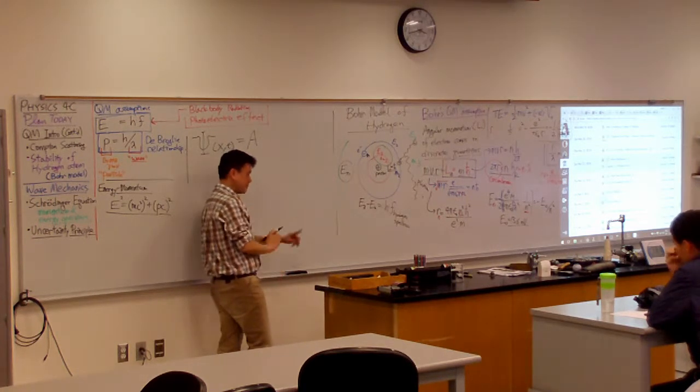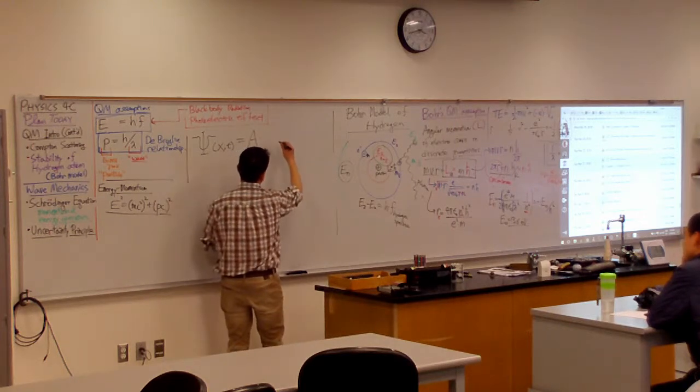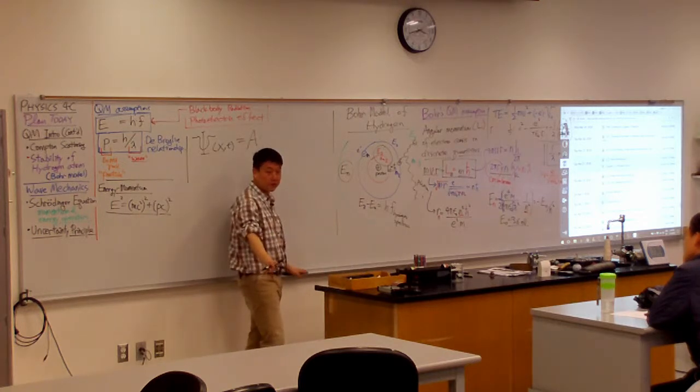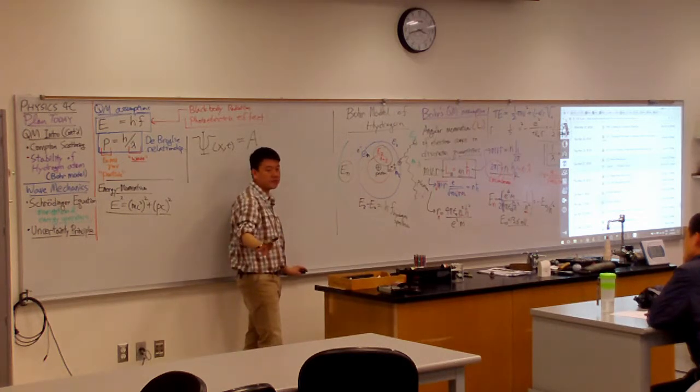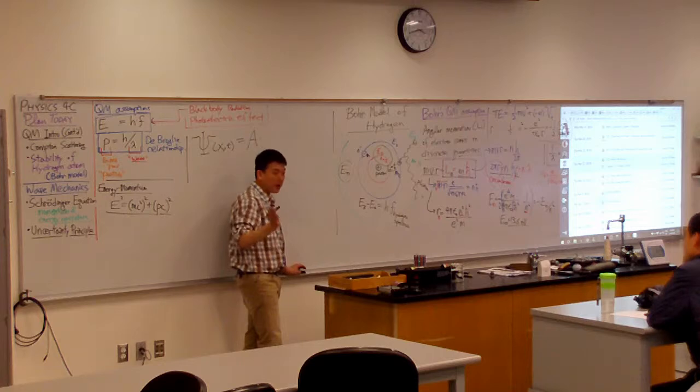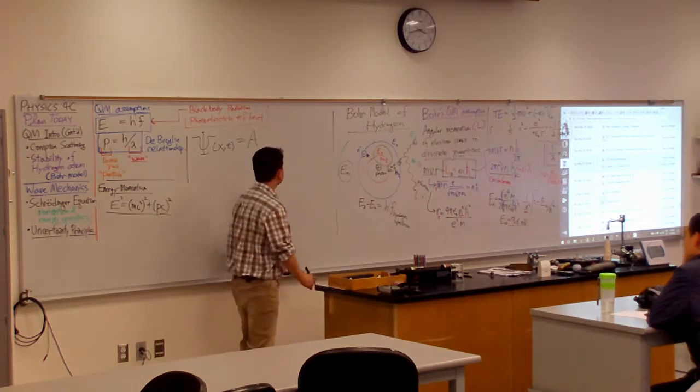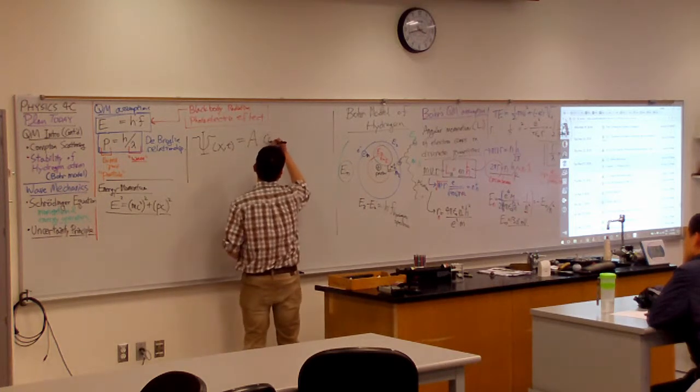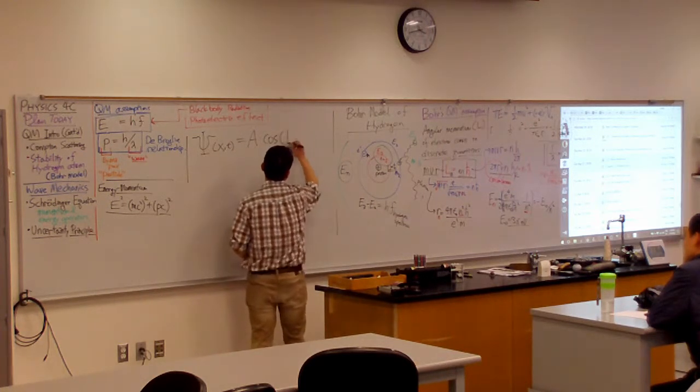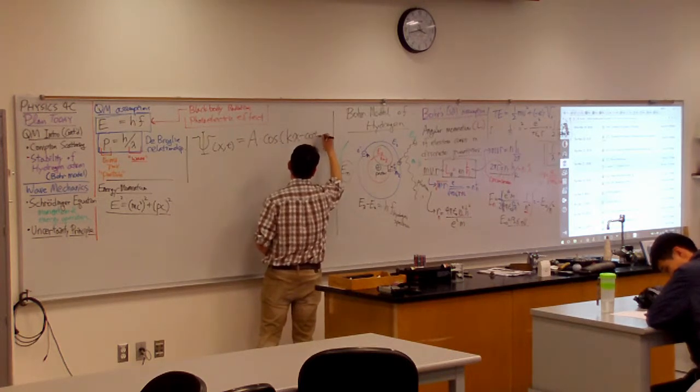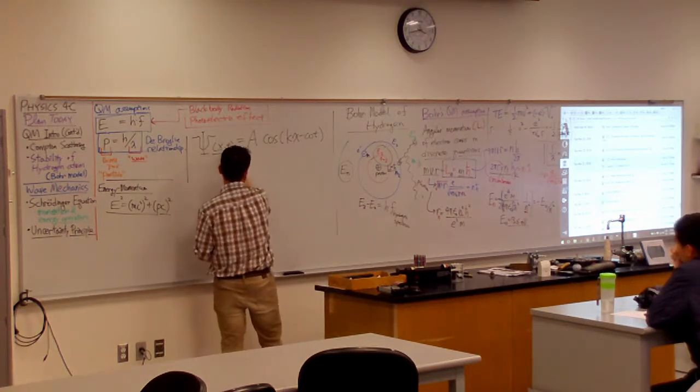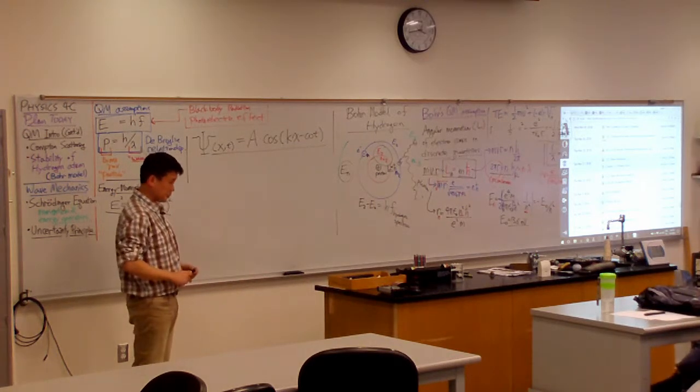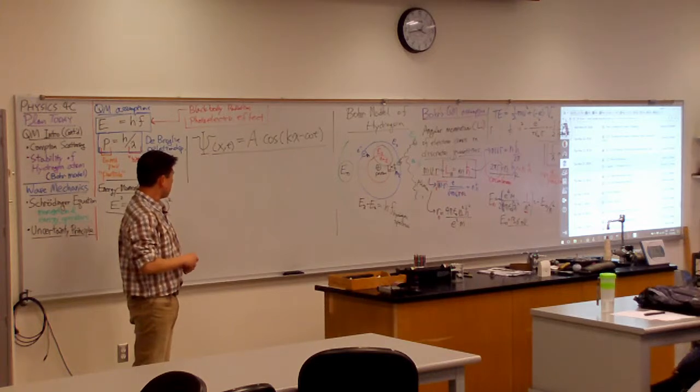Let me use complex exponential. Because it'll actually make better sense that way. Actually, let me start out with the real function, and then you will see why I was telling you that complex functions are required once you get into quantum mechanics. So, if I'm describing this plane wave, I would say A times cosine of kx minus omega t. Right? Yes? Okay.